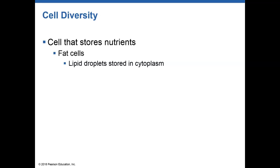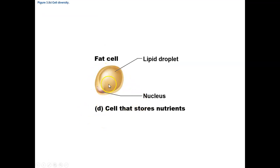We have cells that store nutrients. An example would be fat cells — adipocytes — which store fat droplets. These cells can contain a lot of fat; they can just get larger and larger, which is why when fat gets deposited on the body, it can just keep growing. Here you can see the lipid droplet and the nucleus. This lipid droplet can get larger and larger as we deposit more fat when we have excess nutrients we don't immediately need.